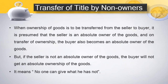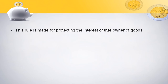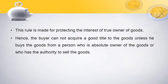This rule is made to protect the interest of the true owner of the goods. It may happen that the person selling the goods to another might have stolen them, and then is selling them to the next person. To protect the interest of the true owner, this rule is made. Hence, the buyer cannot acquire a good title to the goods unless he buys from a person who is the absolute owner of the goods or who has the authority to sell the goods.